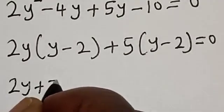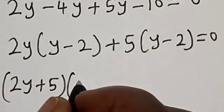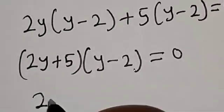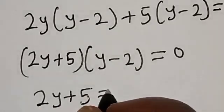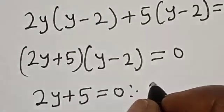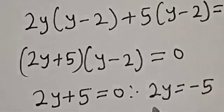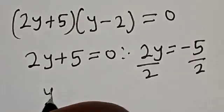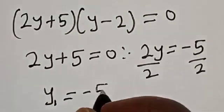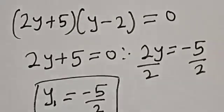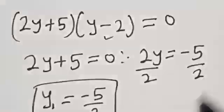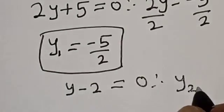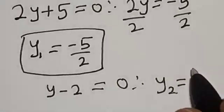So we get 2y plus 5, multiplied by y minus 2, is equal to 0. From the first factor, 2y plus 5 equals 0, so 2y equals minus 5, and dividing both sides by 2 gives y equals minus 5 over 2. From the second factor, y minus 2 equals 0, therefore y equals 2.